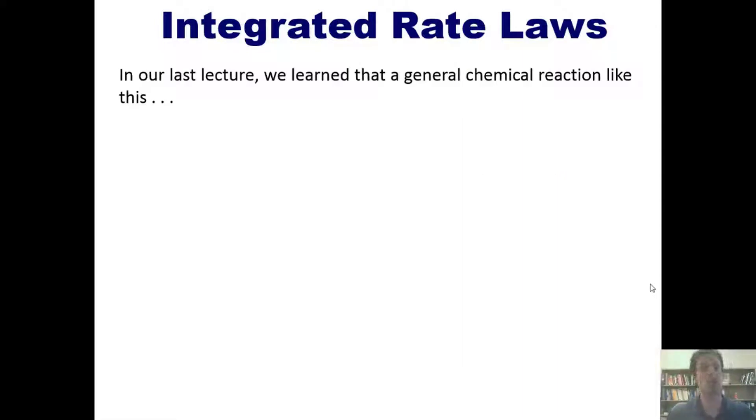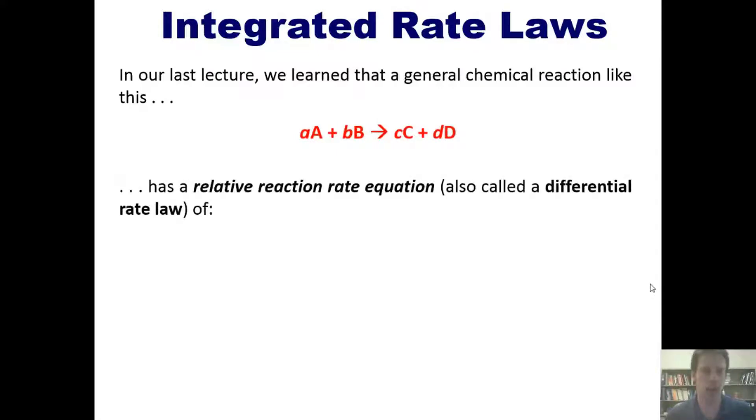In our last lecture, to which I'll post a link right here, we learned that a general chemical reaction, such as this one, has a relative reaction rate equation, which is also called a differential rate law, of this exciting stuff. You'll notice that we have negative signs in front of the reactants' changes in concentration over time.